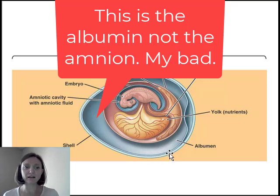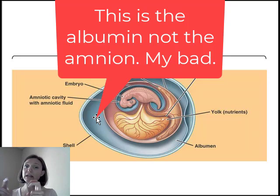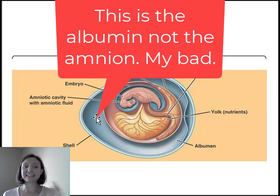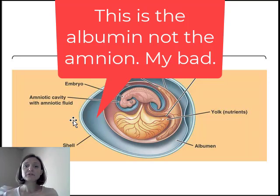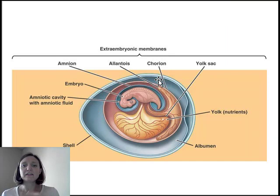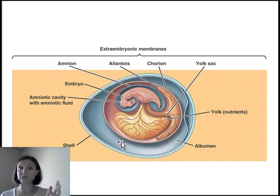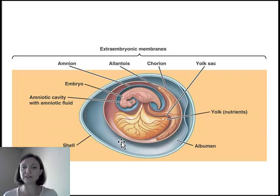The amnion — what would be the egg white in an egg — its main purpose is to protect against mechanical shock. Typically this entire thing is going to be covered in some sort of shell: either a hard calcium carbonate shell in birds or a more flexible shell in reptiles. The amnion provides protection if that egg moves around; it's a shock absorber for the embryo, because that embryo is very fragile as it's developing.